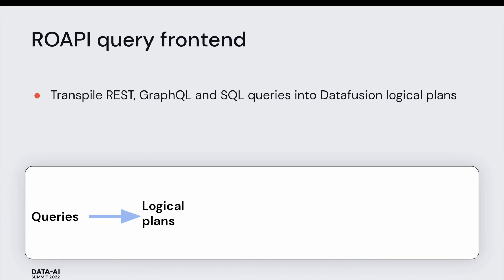ROAPI is divided into a few major components from a design perspective. The first is the query frontend, which is responsible for translating different query interfaces into DataFusion logical plans. The common query interfaces supported are REST API calls, GraphQL, and SQL queries. All of these get transpiled into logical plans, which serve as a single common abstraction for all relational-type queries that ROAPI supports.